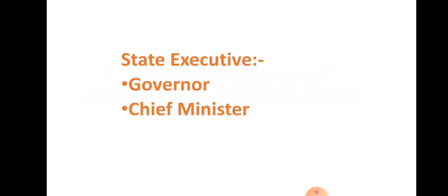Now we discuss the state executive. The state executive consists of the Governor, Chief Minister, and Council of Ministers. The Governor is appointed by the President for five years. He is answerable to the President and executes the orders of the President. The Governor is the constitutional head of the state.